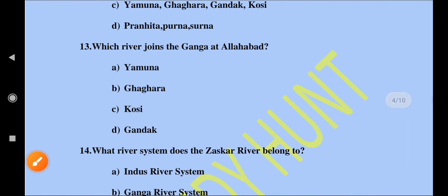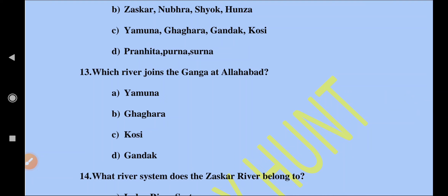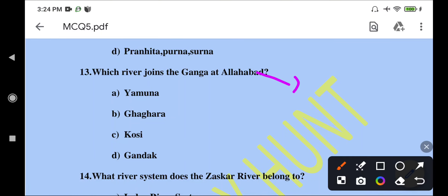Which river joins the Ganga at Allahabad? Allahabad is in Uttar Pradesh. In Allahabad, UP, the Yamuna River joins the Ganga. Allahabad is also known by another name — Prayagraj.